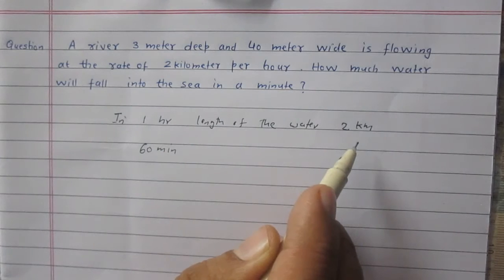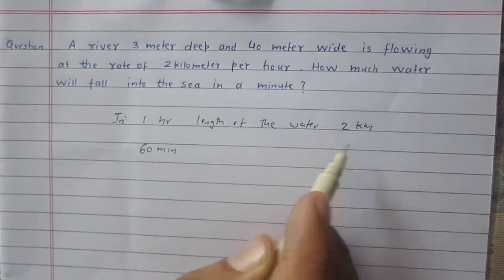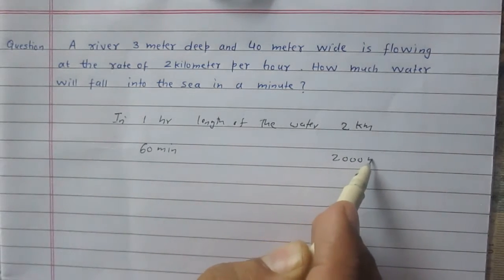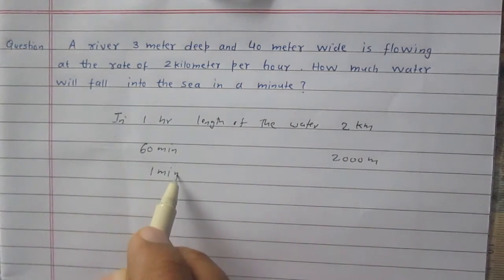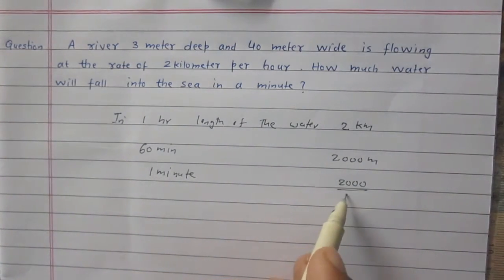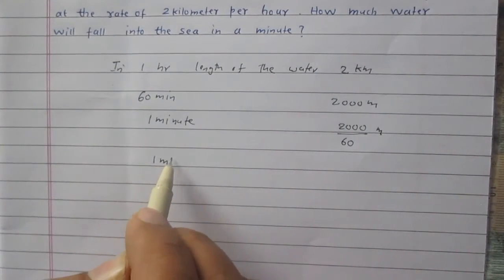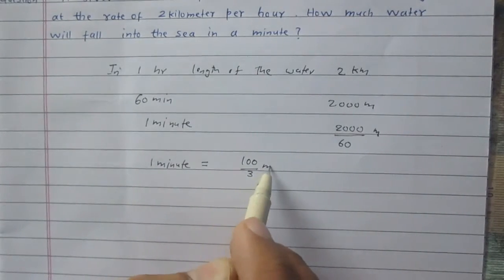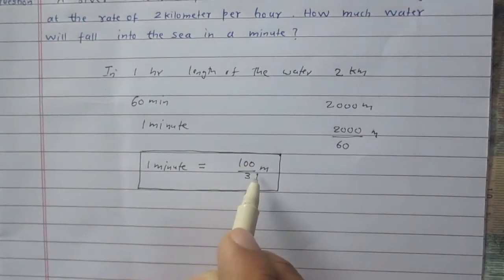Since 1 km equals 1000 meters, 2 km equals 2000 meters. So in 60 minutes, the length of the water is 2000 meters. By the unitary method, in one minute the length of the water is 2000 divided by 60 meters. After simplifying, the length of water in one minute is 100/3 meters. So the rate of flow of water is 100/3 meters per minute.